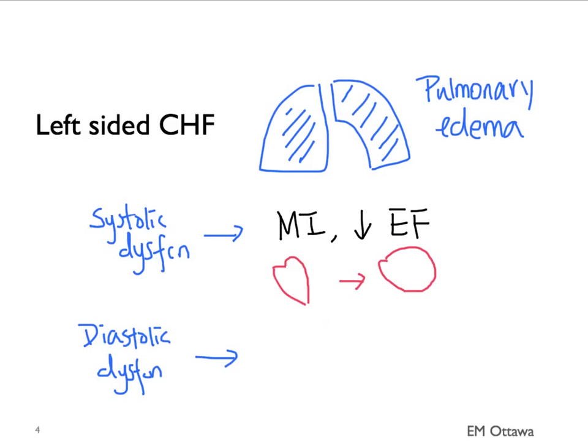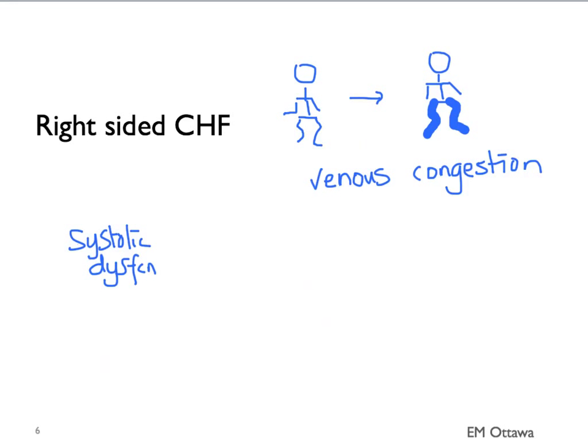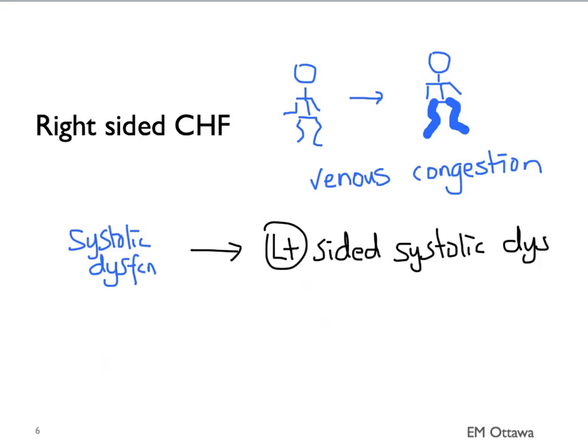Left-sided diastolic dysfunction is less common. It can be caused by tachycardia or valvular disease, in which the myocardium is unable to relax and therefore the ventricle is slow to fill. Right-sided heart failure presents as peripheral edema from venous congestion. The most common reason for right-sided systolic dysfunction is left-sided systolic dysfunction. It can also come from pulmonary disease such as pulmonary hypertension. Right-sided diastolic dysfunction is rare.